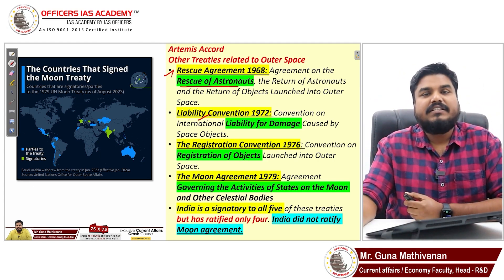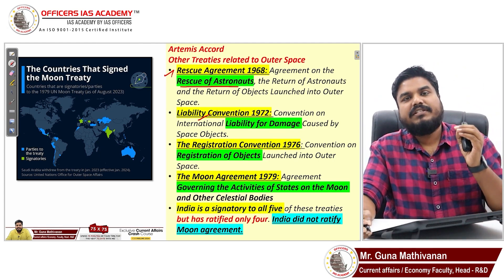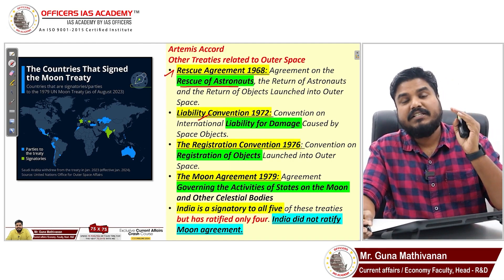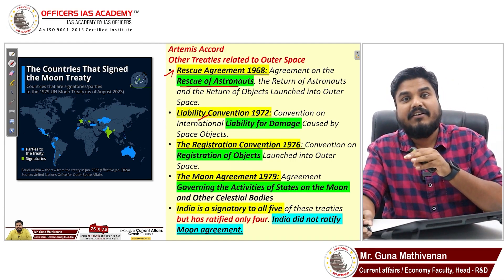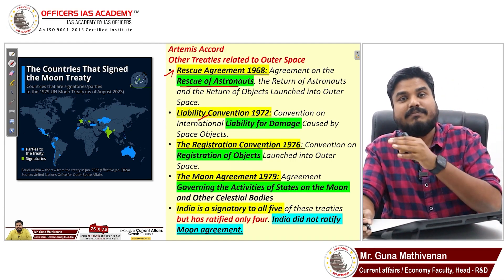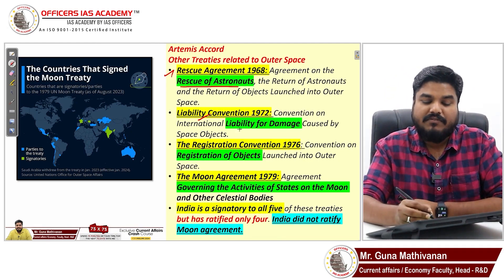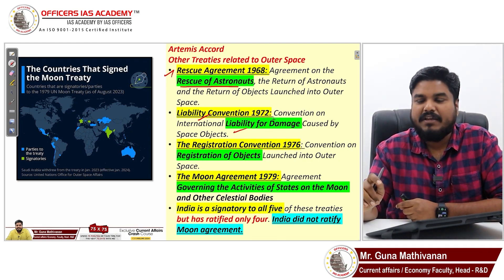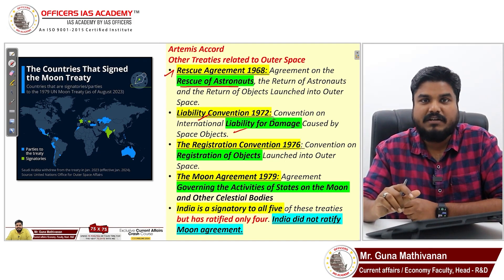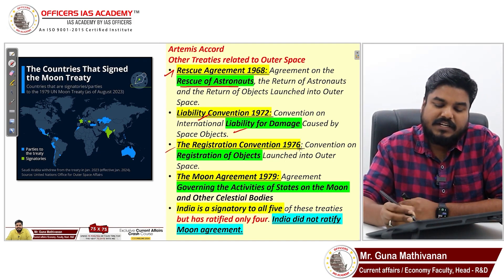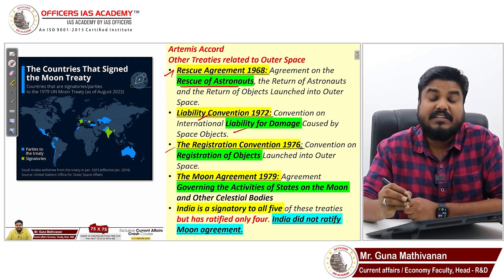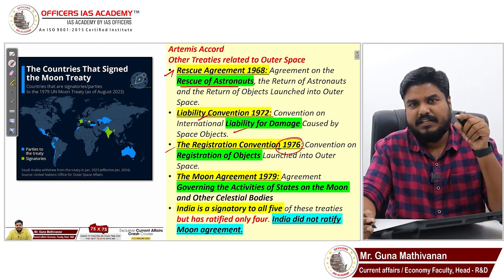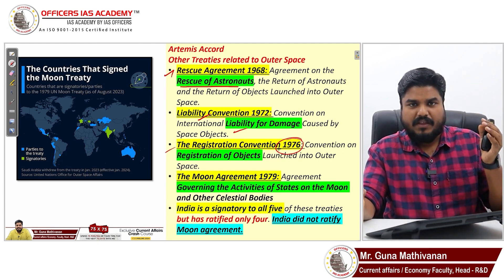The third is the Liability Convention. If America launches a satellite or spacecraft that damages another country's satellite or spacecraft, then the launching country has to cover the liability — the damage has to be compensated by that country.